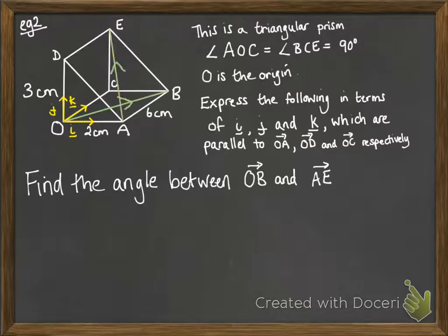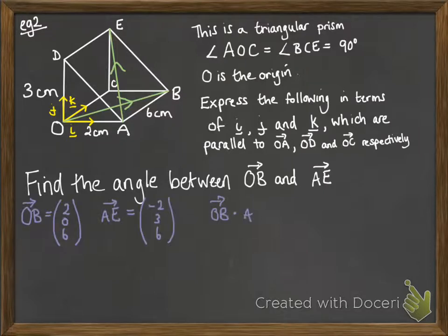So first thing is we actually have to find those vectors. So there we have OB and AE just by using the directions with the i, j, k. You've had lots of practice of those. Now the scalar product of those will be the 2 times the minus 2, the 0 times the 3, the 6 times the 6, and add them together. We get an answer of 32.